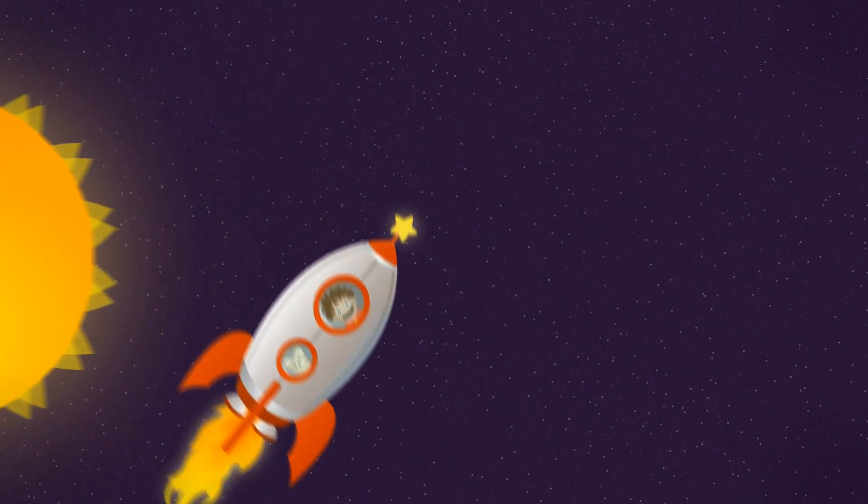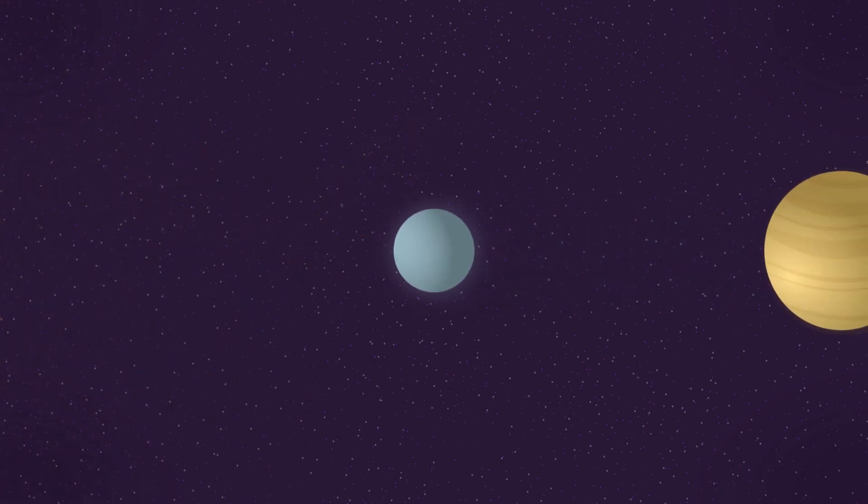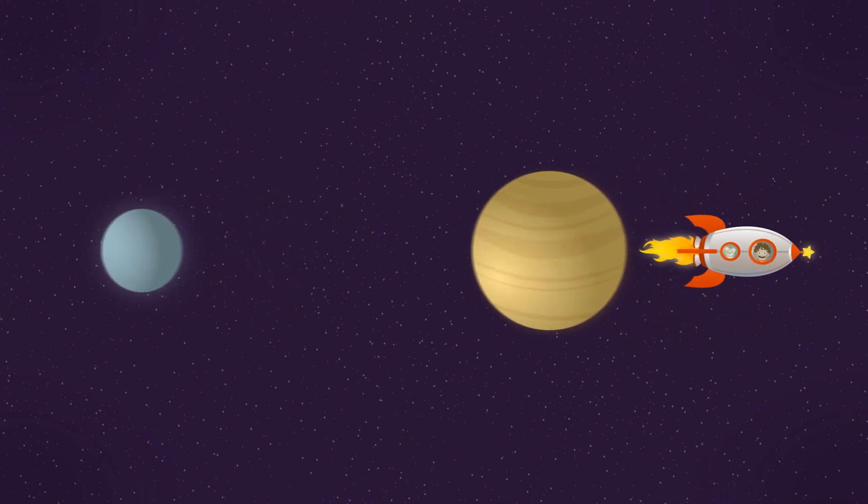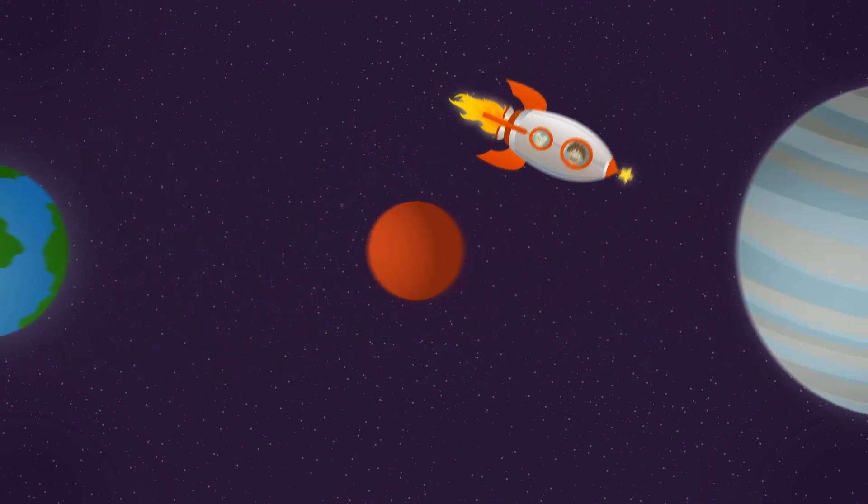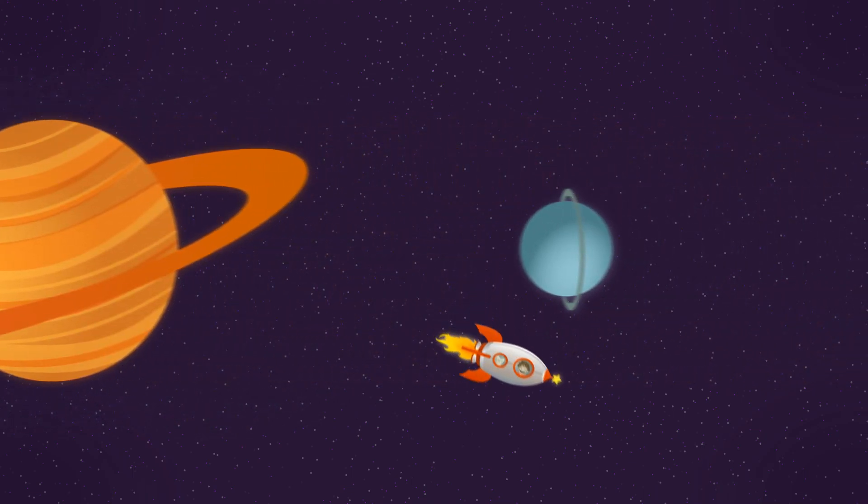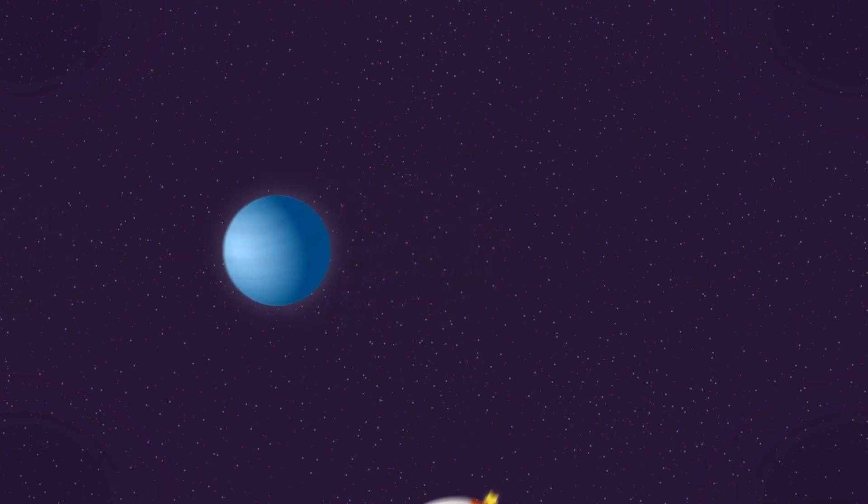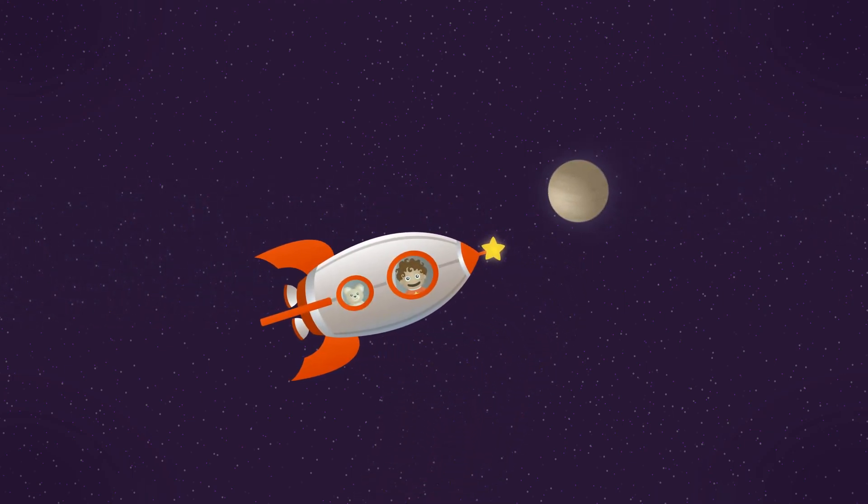My rocket ship will fly past all the planets in our solar system: Mercury, Venus, Earth, Mars, Jupiter, Saturn, Uranus, Neptune. And I will even go visit a dwarf planet called Pluto.